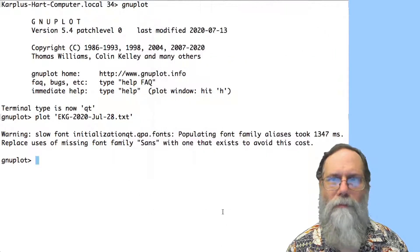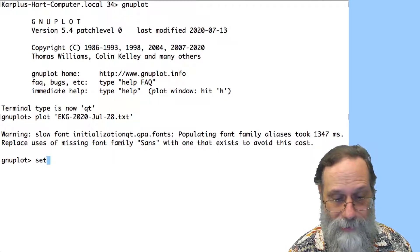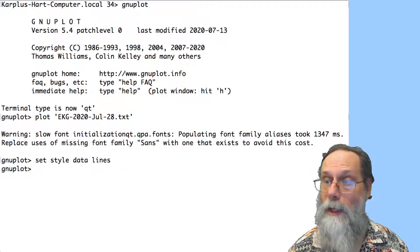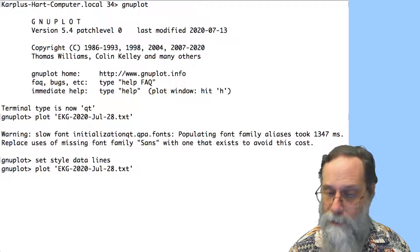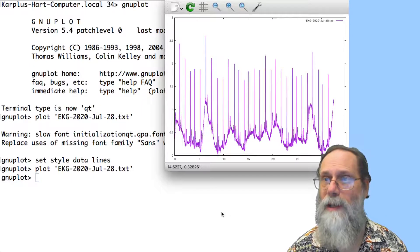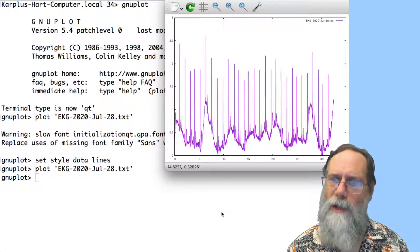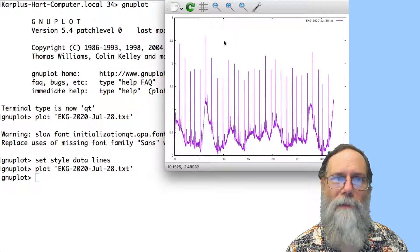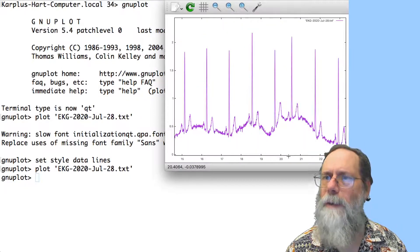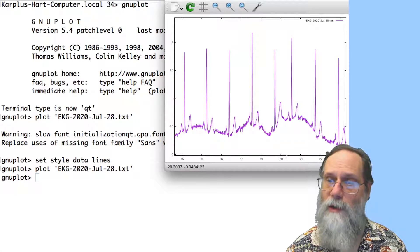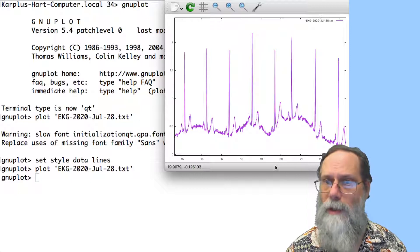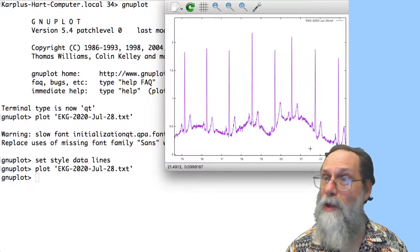So how do we change that? We can say set style data lines. And this says, when I plot data, plot them with lines. If I do that plot again, I use an up arrow to get back to the previous plot. Now it looks more like an EKG. Got those big spikes and you can see some bumps. But I don't like the ranges here. There's two ways that I can change and zoom in on this thing. One is I can use my left button and just say, what I'm interested in is from about here to about here, and then click with the right button, and it zooms in. That has set two different values, the X range and the Y range.